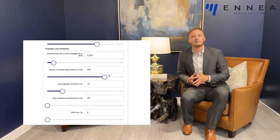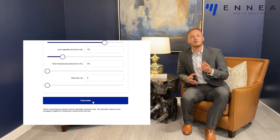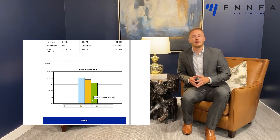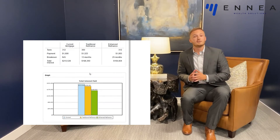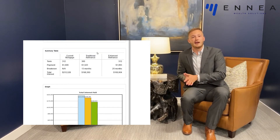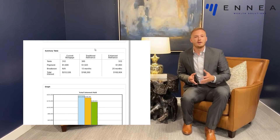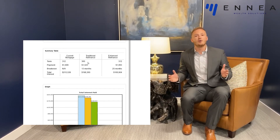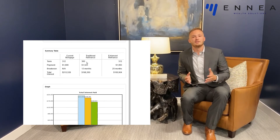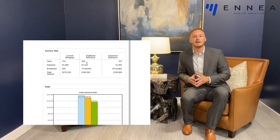If we scroll down further to the inputs, we see two different options for refinancing this mortgage. The first is what is called a traditional refinance. This is where you take that lower interest rate — 3.25% in our case — and stretch that back over a 30-year term. In this case, you're resetting the loan term at a lower interest rate.